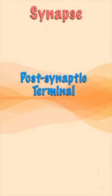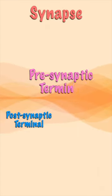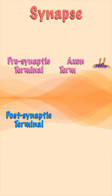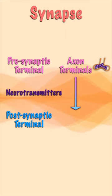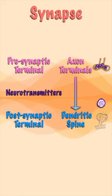The neurons are not physically connected. They have a gap between them and they form a complex structure which we call a synapse, where we have a post-synaptic terminal and a pre-synaptic terminal formed by axon terminals which release neurotransmitters to stimulate dendritic spines.